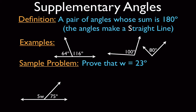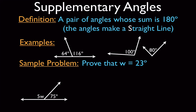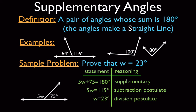In this example, we're going to try to prove that w equals 23 degrees. Anytime you do a problem like this, you need to think about what type of problem it is. When you see that straight line — remembering S is for straight line — it means it's a supplementary problem, equal to 180 degrees. We set up a two-column proof: 5w plus 75 equals 180, because they're supplementary angles. Then subtract 75 from both sides using the subtraction postulate, divide by 5 with the division postulate, and prove that w equals 23. QED.